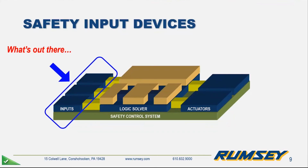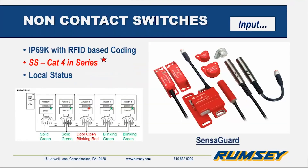For the safety input devices, now we're going to get into the actual products. We just mentioned the sensor guards — this product has been out for a while and a lot of people have adopted it. It's solid state, so it can be cat four in series. The wiring diagram on the bottom shows what it would look like for them to be in series. If you see switch number three showing door three were to be opened, that particular switch would blink red, while the other switches would stay green, letting you know which one is open or faulted — giving you local status to make troubleshooting a little bit easier.